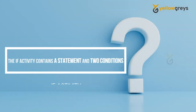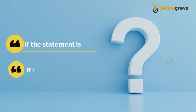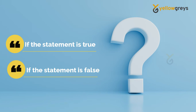Before we start, we need to understand what IF activity is. The IF activity contains a statement and two conditions. The first condition is executed if the statement is true, while the second one is executed if the statement is false.